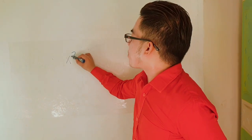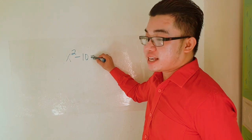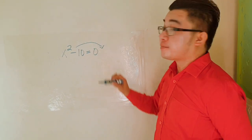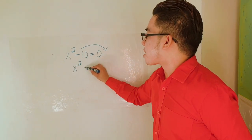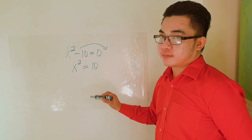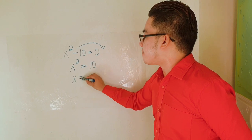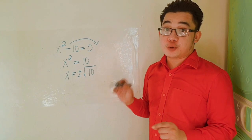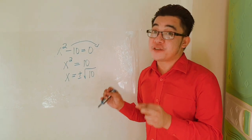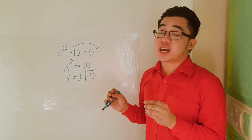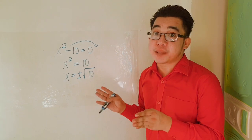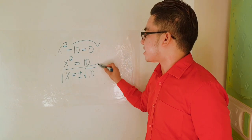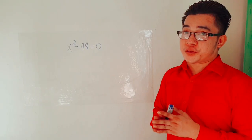Example number 2: x squared minus 10 is equal to 0. The first process is to transpose negative 10 to the other side, giving us x squared is equal to 10. Then extract square roots, so x is equal to positive and negative square root of 10. We know that 10 is not a perfect square number, because we cannot find a whole number that when multiplied by itself gives 10. Therefore, this is already the final answer.